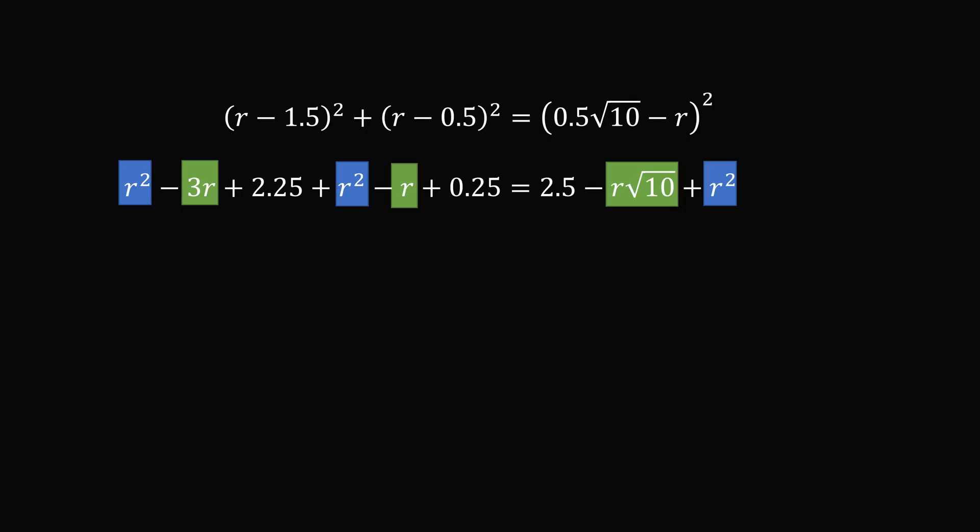Then we will group the R terms. Finally, we will look at the constant terms. We have 2.25 plus 0.25, and that is equal to 2.5. So that will exactly cancel with the 2.5 on the right-hand side. So this equation becomes R squared minus 4R plus R multiplied by the square root of 10 is equal to 0.